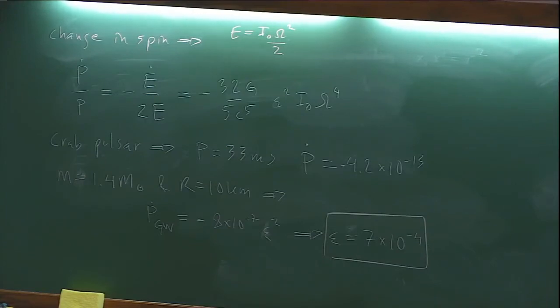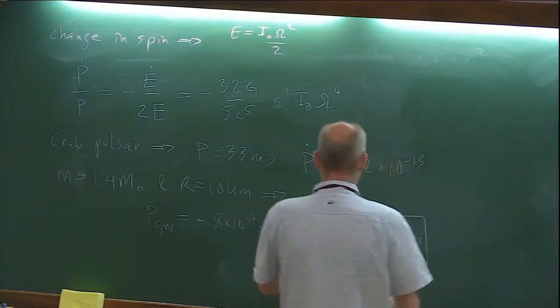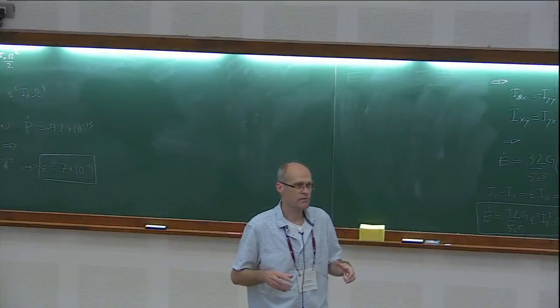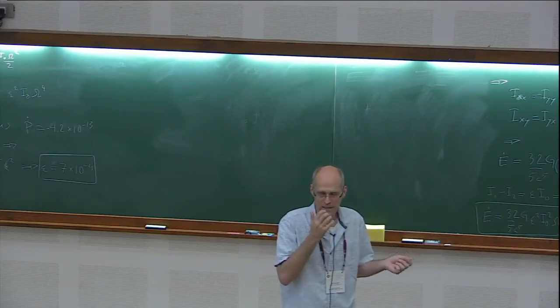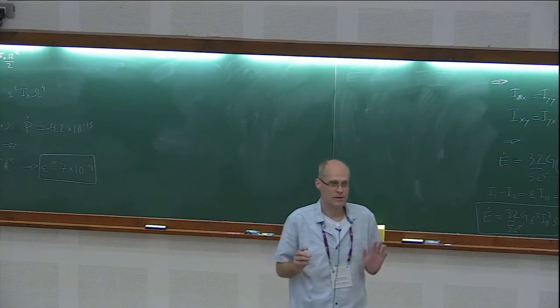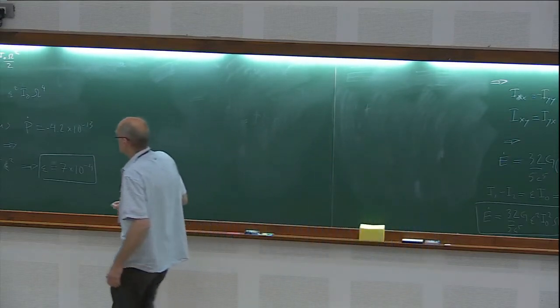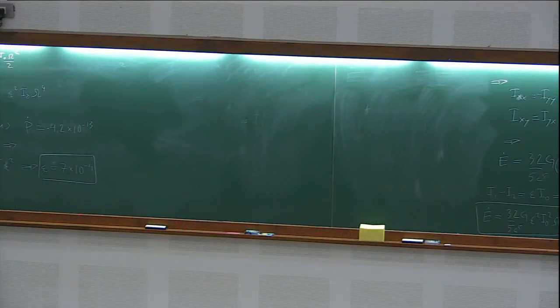So what does this tell us? In order for gravitational waves to spin this object down, I need a very small deformation — about 10 to the minus 3. For a 10-kilometer object, that means stretching it by about 10 meters in one direction. You might think that's not so much, but for neutron stars, as we will see, this turns out to be a whopping big number. There are also other reasons to suggest this can't be entirely true, which we'll discuss, but I'll leave that for later.